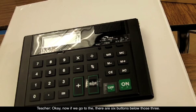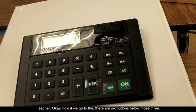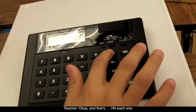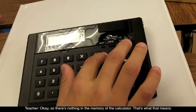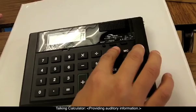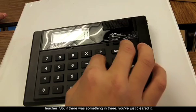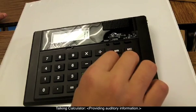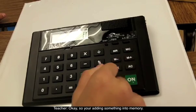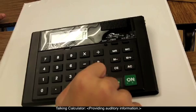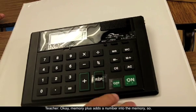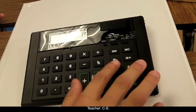Now if we go to the six buttons below those three, take a feel. He moves his fingers down. Hit each one. Memory zero. So there's nothing in the memory of the calculator. Now go to the one to the right of that. Memory clear. So if there was something in there, you've just cleared it. Now go to the one below MR. Memory minus. You're taking something out of memory. Memory plus. You're adding something into memory.